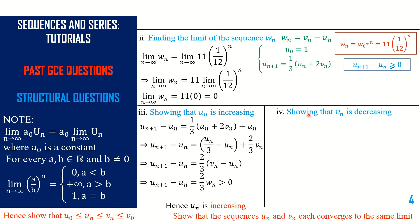Roman IV is asking us to show that v(n) is decreasing. To show that v(n) is decreasing, we need to show that v(n+1) − v(n) ≤ 0. If it is monotonically decreasing, we just need to show it is strictly less than 0.